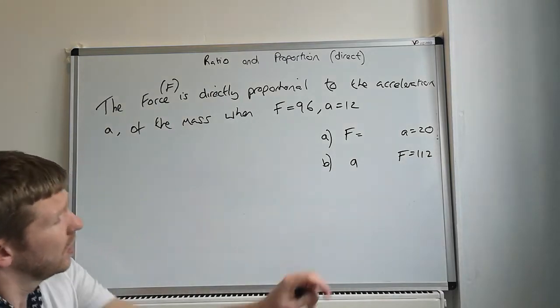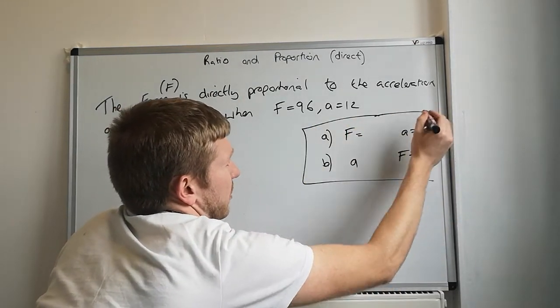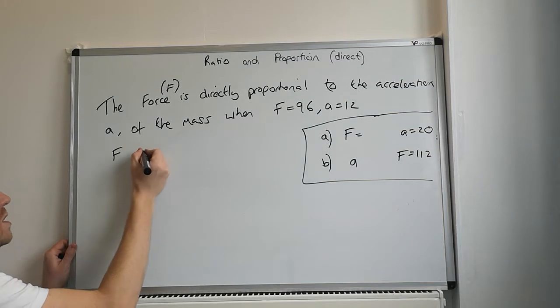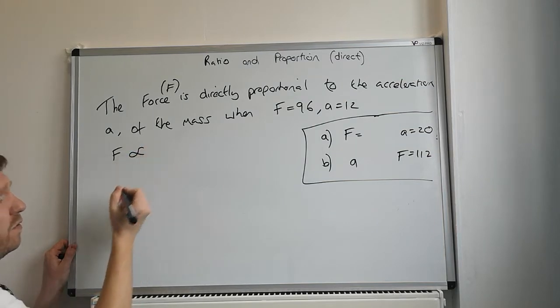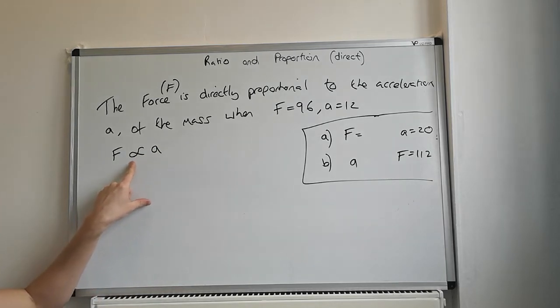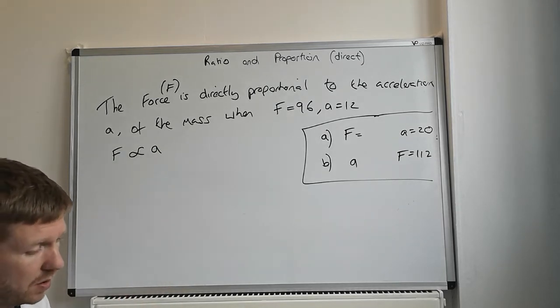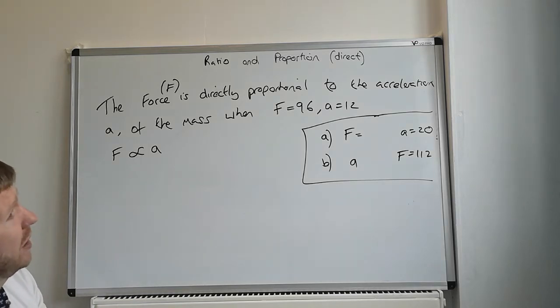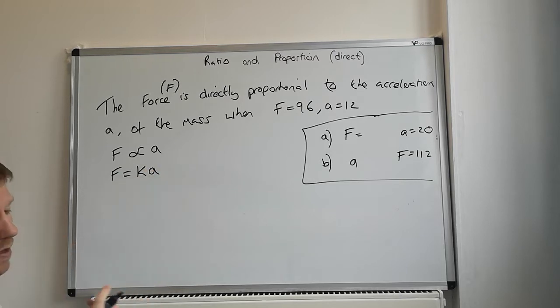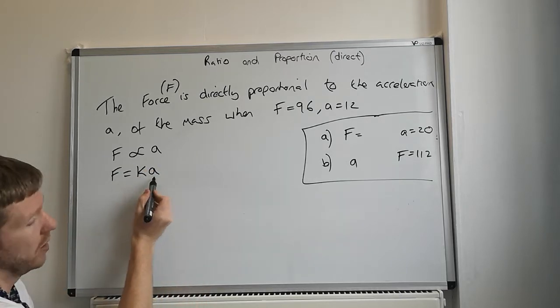So this bit here is the bit that we're going to come to at the end. Start off with, there's a bit of a process. The first thing we'd like to do is to write down F is proportional to a. That's the proportional sign. It's a bit like the infinity sign, but it's not joined up. Now, because it's directly proportional, that means we're multiplying by a constant k, our constant of proportionality. So F is equal to ka. Direct proportion is multiplying.